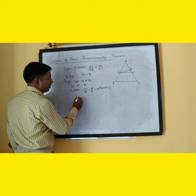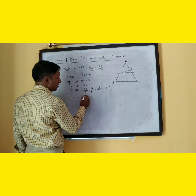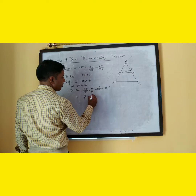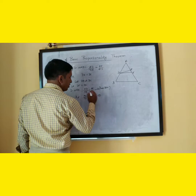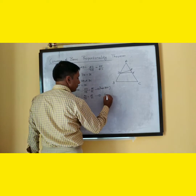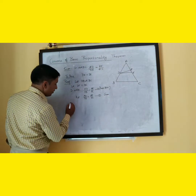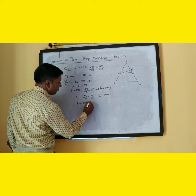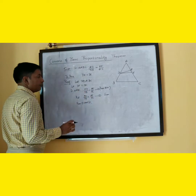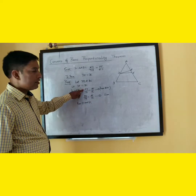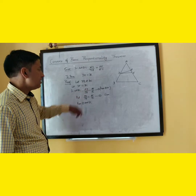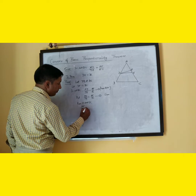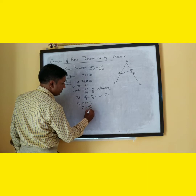But it is given that AD by DB is equal to AE by EC. From these two results, we can write that AF by FC is equal to AE by EC.